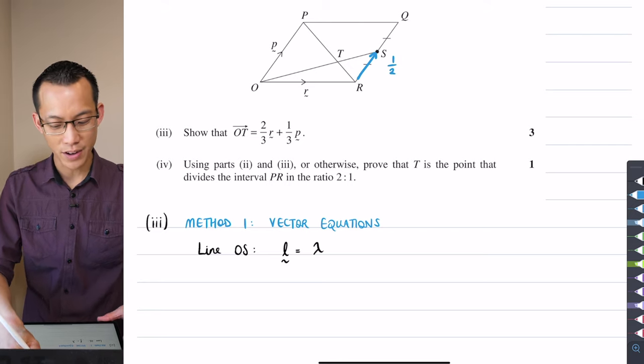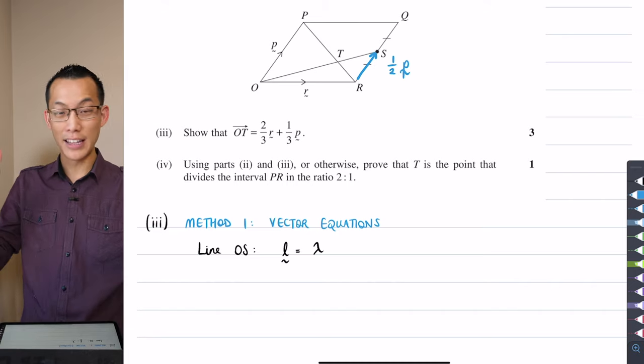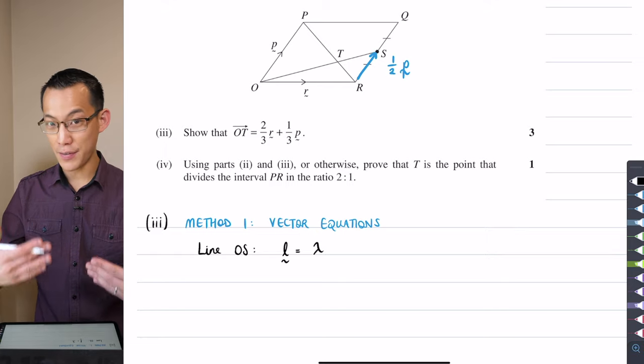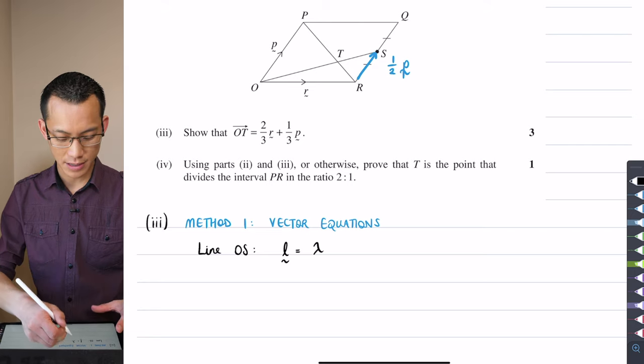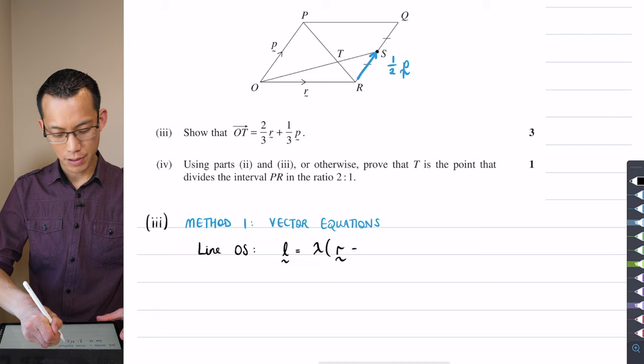It's half, because you've got this midpoint here. S is the midpoint of RQ, and it's parallel to P so the directions are the same but the magnitude is halved. Therefore, my direction vector for line OS is going to be—there's my lambda for the parameter—and it's going to be r plus half p. Bam, that's it. That is line OS.